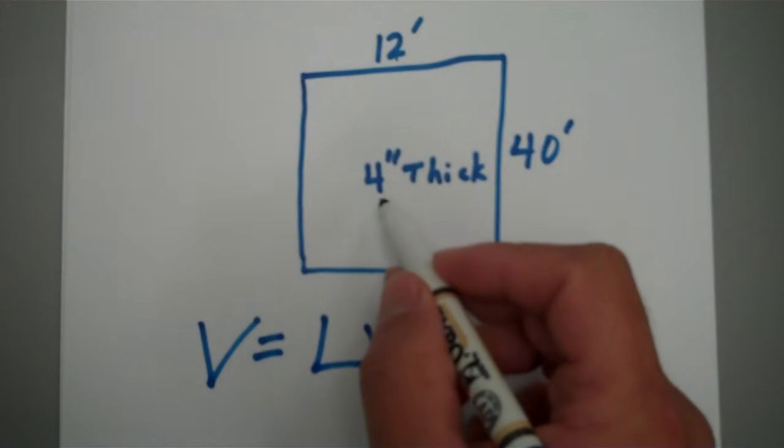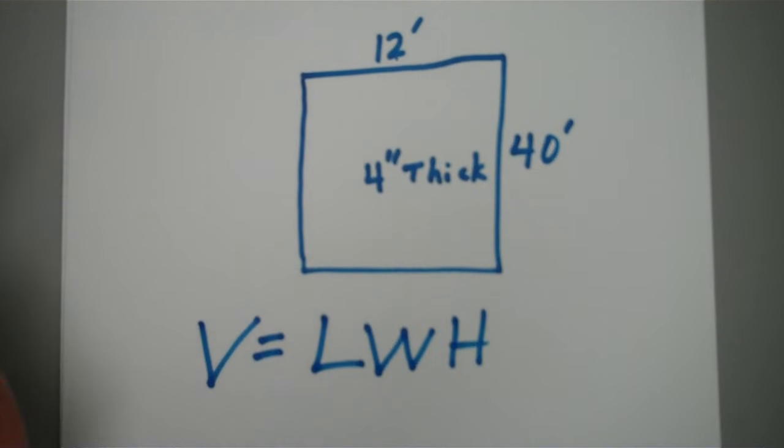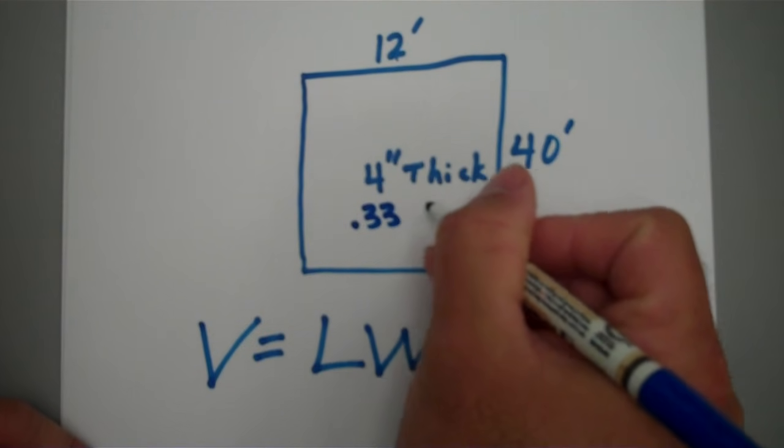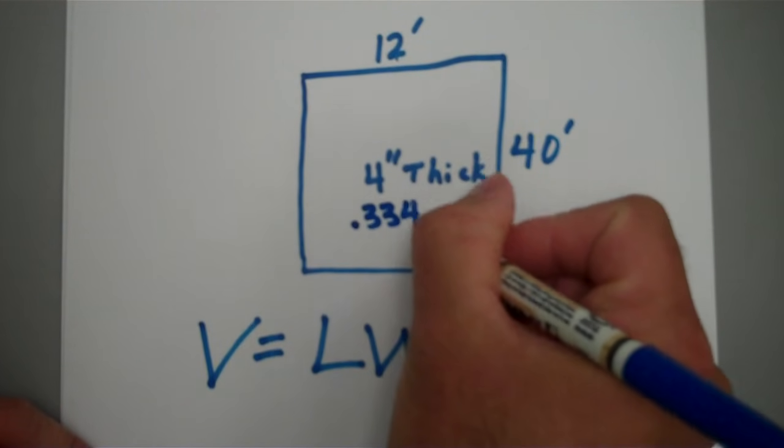To figure out how many feet is in 4 inches you basically take your 4 and divide it by 12, because there is 12 inches in 1 foot. So you're just trying to figure out what the decimal is for 4 inches. What I get is 0.33 and so on. I'm gonna put 4 on there and that's in feet.